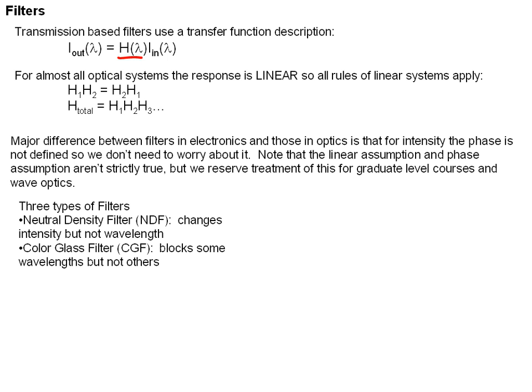Color glass filters, which block some wavelengths and let others pass. And interference filters, which are like color glass filters, but they're very, very narrow bandpass or band-blocking filters designed for very specific wavelength ranges.